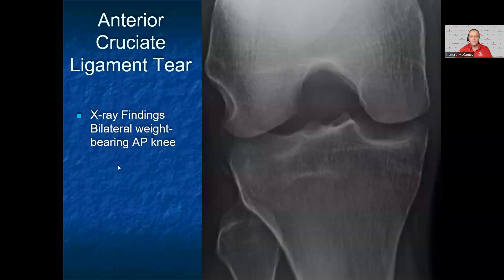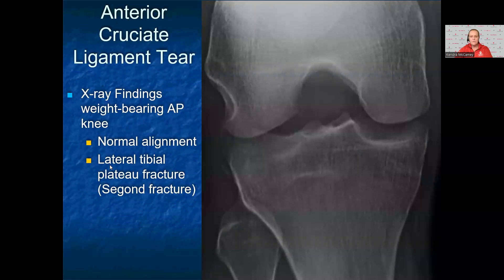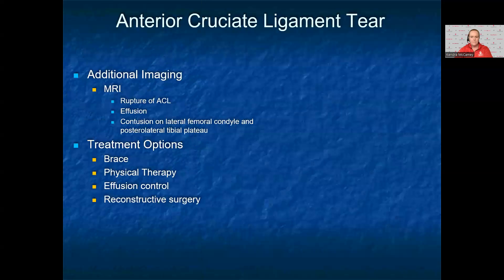This is her weight-bearing AP view that is magnified. This AP standing view shows normal knee alignment, but you can see a small avulsion of bone near the lateral tibial plateau — this is called a Segond fracture. When you see this, you need to assume that there is an ACL tear. For this history, you will need an MRI to further assess for internal derangement of the knee. The MRI can show an ACL tear, as well as any other ligament tear, meniscal tear, or bony edema from the injury. With an ACL tear, you will often see bony edema on the lateral femoral condyle and the posterior lateral tibia, consistent with bony contusions. Treatment includes bracing, physical therapy, effusion control by aspiration or medication, and surgery to reconstruct the ligament.